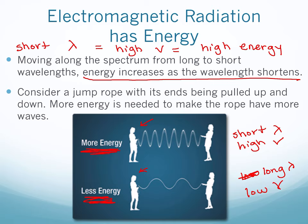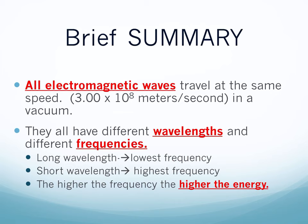Summary: all electromagnetic waves travel at the same speed — the speed of light in a vacuum. They all have different wavelengths and therefore different frequencies. Long wavelength means low frequency; short wavelength means high frequency. The higher the frequency, the higher the energy. Remember the equation: c = λν, where c is the speed of light, λ is wavelength, and ν is frequency.